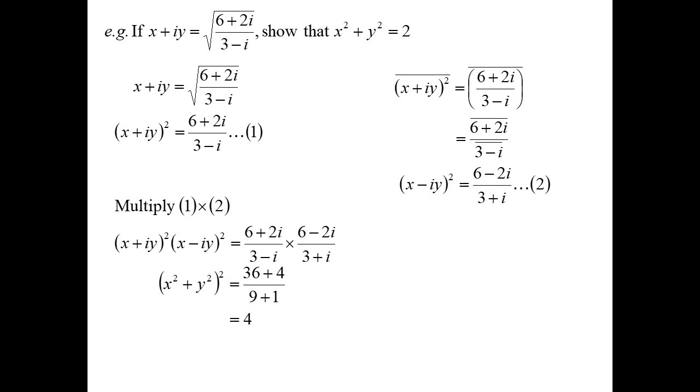On the right-hand side, look at my fractions, they're conjugates as well. Sum of two squares, I get four. But that's x squared plus y squared squared. We want x squared plus y squared. Got to be two.